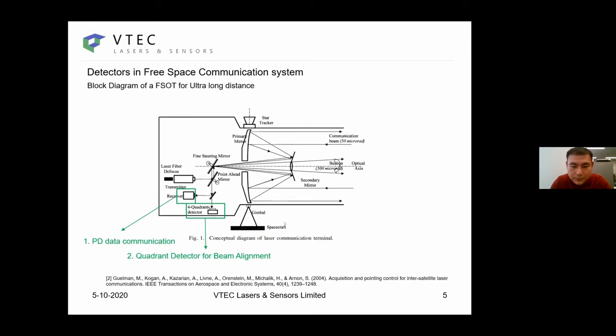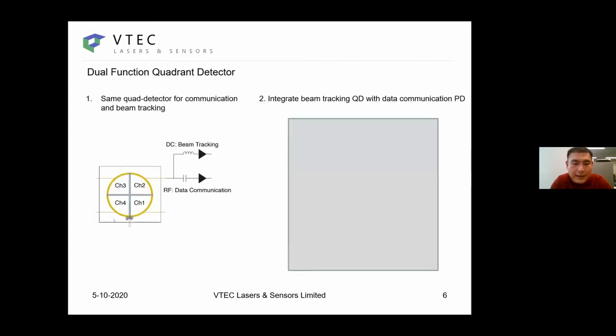The next slide is acquisition and pointing control for inter-satellite laser communications, where we can also see a receiver for data communication and four quadrant detectors for beam alignment. As we had some experience in digital high speed photo detectors and recently have a request in detectors for beam alignment, we came up with the idea of integrating the two functions together, which would reduce the complexity of the system.